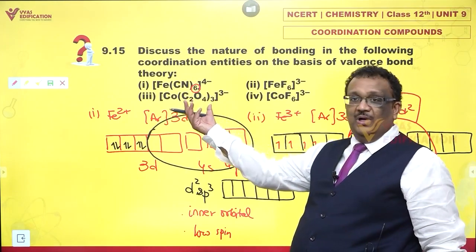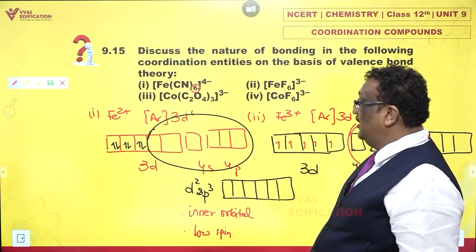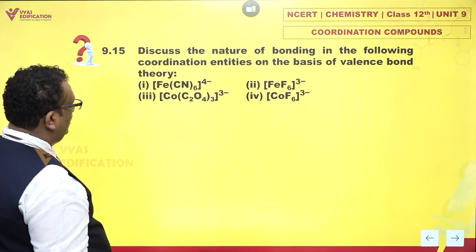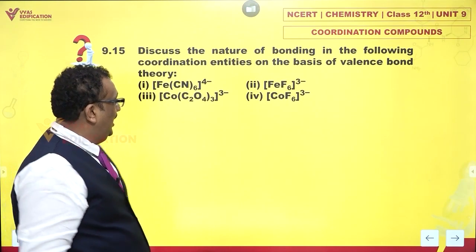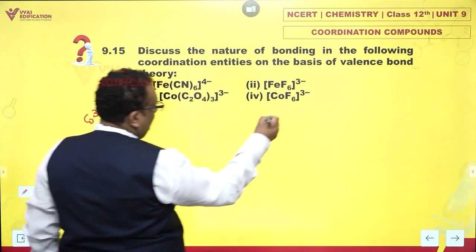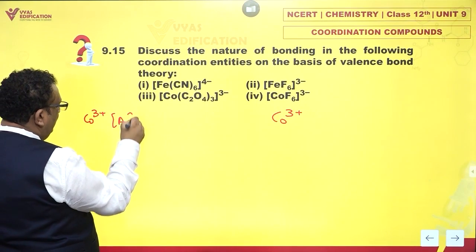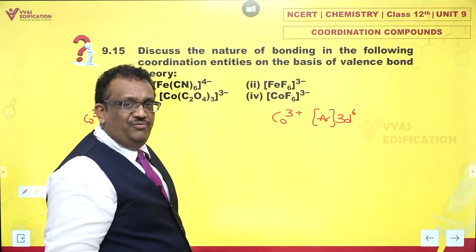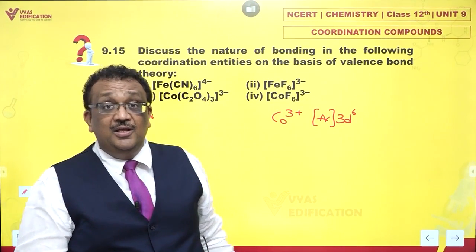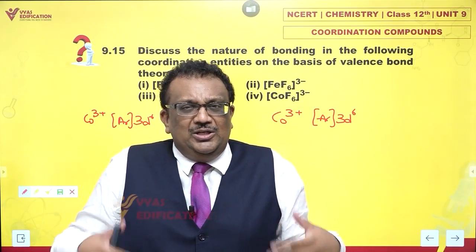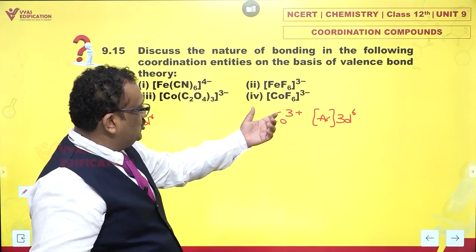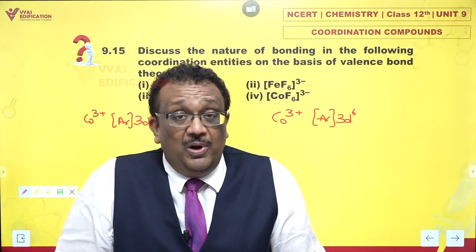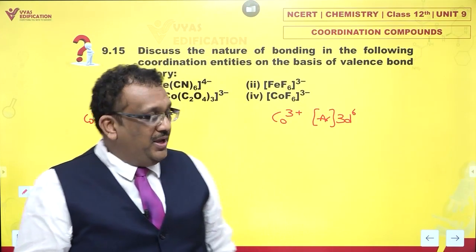The next two are tris(oxalato)cobaltate(III) and hexafluoridocobaltate(III). In both cases I have cobalt plus three as the central cation. Cobalt(III) is [Ar]3d6. As you move across the periodic table from left to right, the tendency to become low spin increases, so cobaltic is very keen to pair up. However, fluoride is a very weak field ligand.